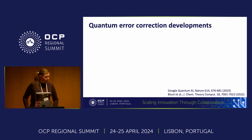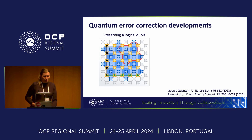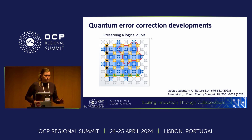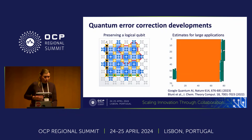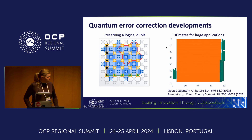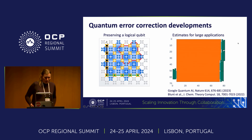Switching to some recent developments in quantum error correction: we've seen a lot of hardware experiments demonstrating error correction in practice. This is taken from a recent paper by Google, where they looked at scaling up a surface code logical qubit and reducing the logical error rate. There's also been a lot of work on resource estimation — figuring out the actual overhead of implementing a fault-tolerant algorithm on an error correcting code. But there's a large gap between these small-scale experiments and the larger applications needed to solve key problems.